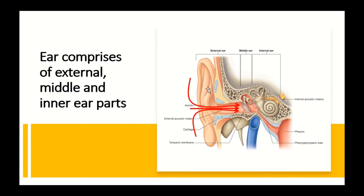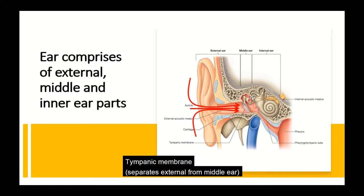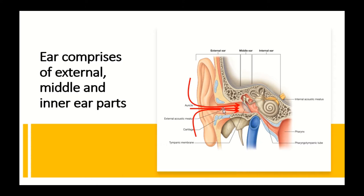Sound waves are transmitted from the auricle through the external ear canal and eventually hit the tympanic membrane. The tympanic membrane separates the external ear from the middle ear cavity. Any obstruction to the flow of sound waves across this entire pathway results in a specific kind of deafness known as conductive deafness. Conductive deafness results because of obstruction to the flow of sound waves in the external ear canal.